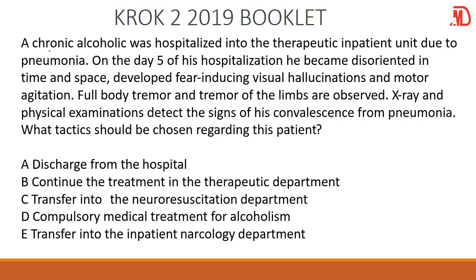So this is a chronic alcoholic who was hospitalized for pneumonia. The patient on hospitalization became disoriented in time and space, developed fear-inducing visual hallucinations, agitations, and tremors. X-ray will reveal a confluent form of pneumonia. What tactics should be chosen regarding this patient? First of all, this is somebody who is addicted to drinking, and now that he has been hospitalized he is not getting access to alcohol, so the patient is actually suffering from withdrawal symptoms.